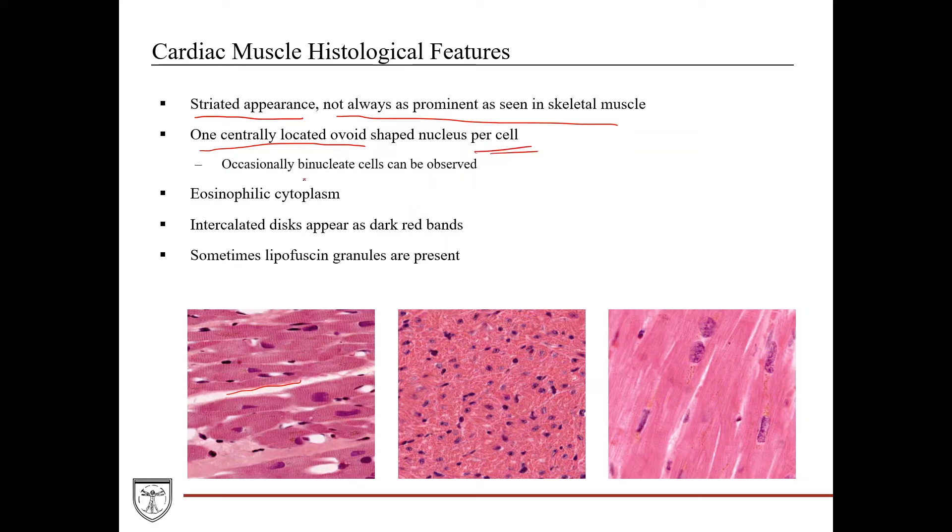Cardiac muscle cells have one centrally located ovoid-shaped nucleus per cell, usually. Sometimes, occasionally, they'll have binucleate cells where you'll have two nuclei, but usually it's just one per cell. And again, unlike skeletal muscle, they're located in the center, not in the periphery like skeletal muscle, and they're round-shaped.